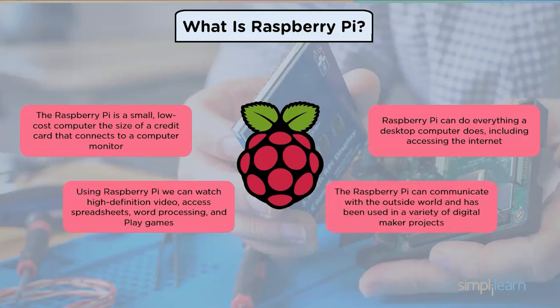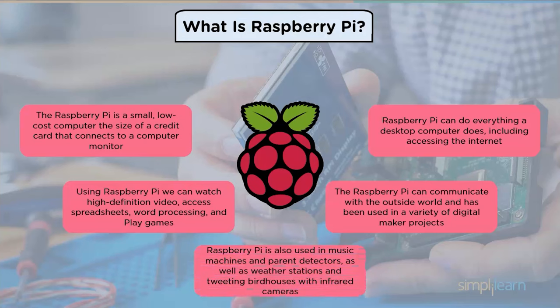Using Raspberry Pi we can watch high definition videos, access spreadsheets, word processing, and play games. The Raspberry Pi can communicate with the outside world and has been used in a variety of digital maker projects. Raspberry Pi is also used in music machines and motion detectors, as well as weather stations and tweeting bird houses with infrared cameras.